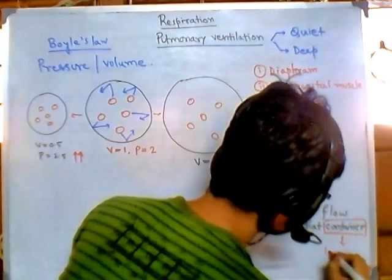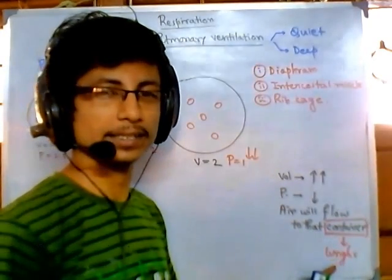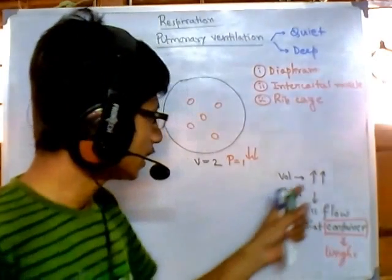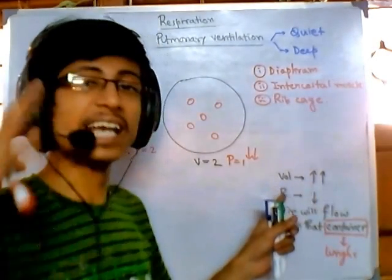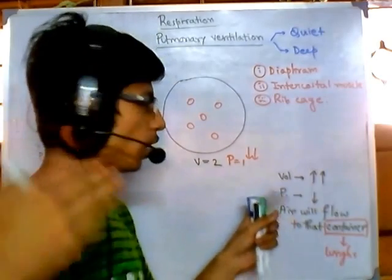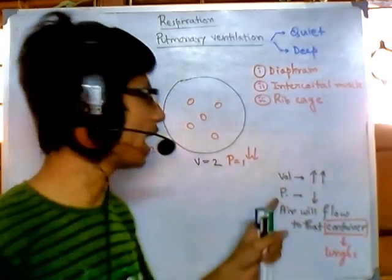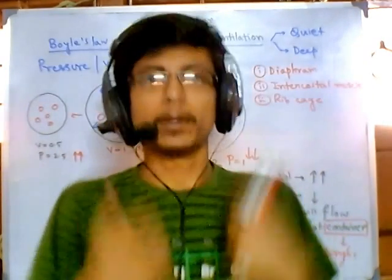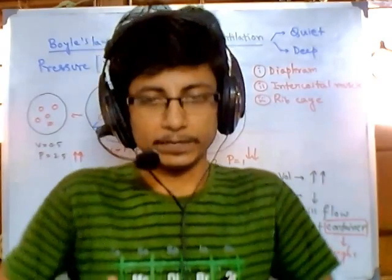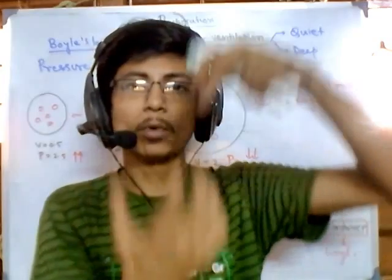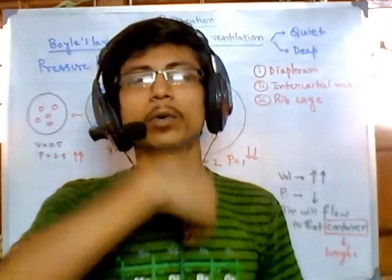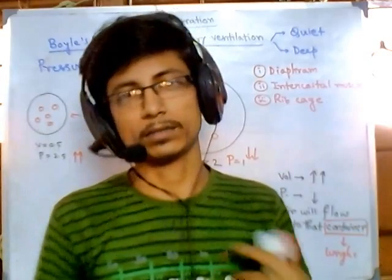Now, if I tell you this container is nothing but our lungs and alveoli — if we can increase the volume of our lungs, the pressure inside our lungs will fall. Then air will flow from outside into our lungs. That's the idea of breathing. We simply lift our ribcage to create more volume so that pressure drops, and by the natural law air flows from higher pressure outside into our lungs which are at lower pressure.